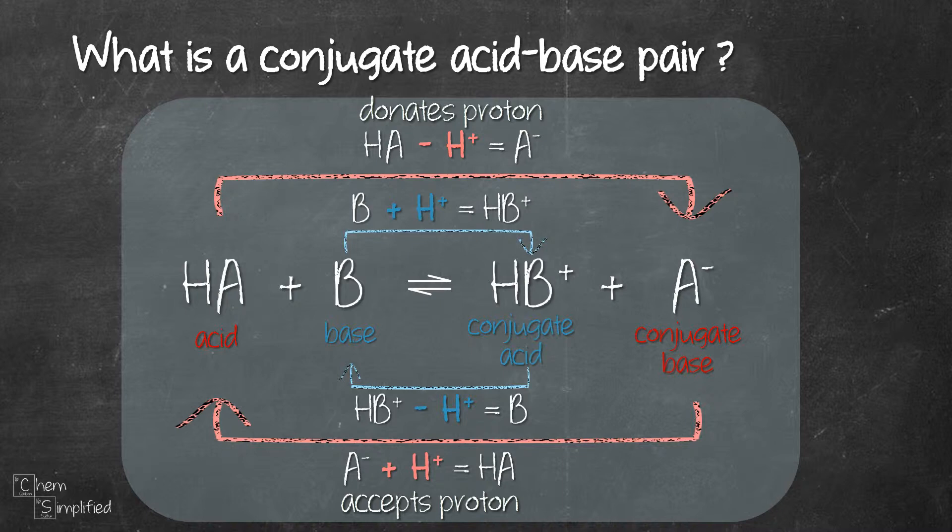So if you look closely, HA and A- which is the acid and its conjugate base, they are only different by H+. Whereas B and HB+ which is the base and its conjugate acid, they are also different by H+ as well.